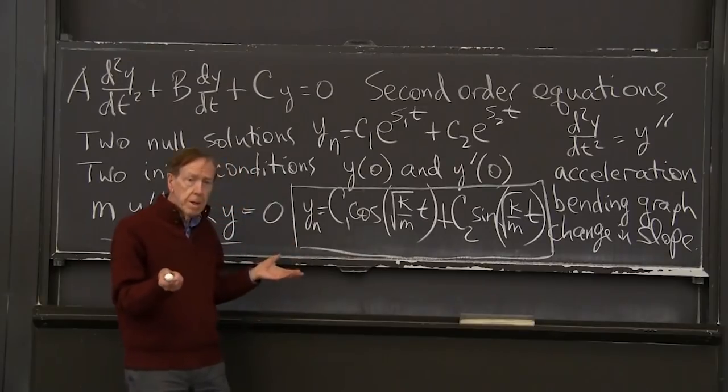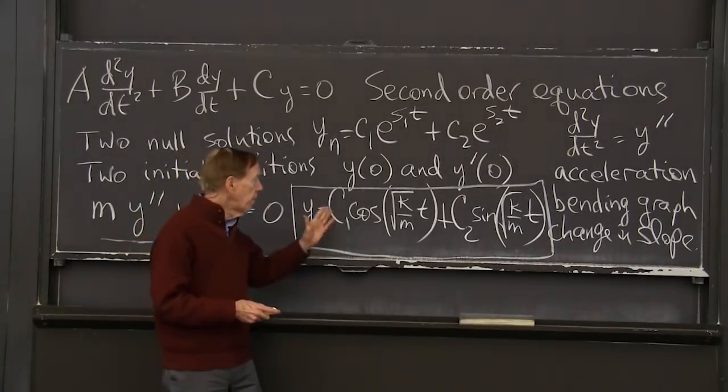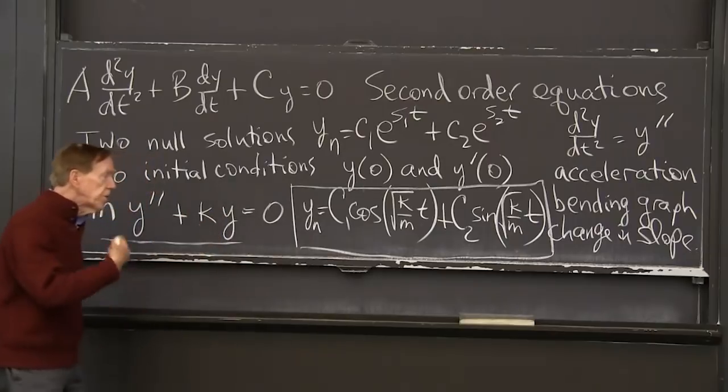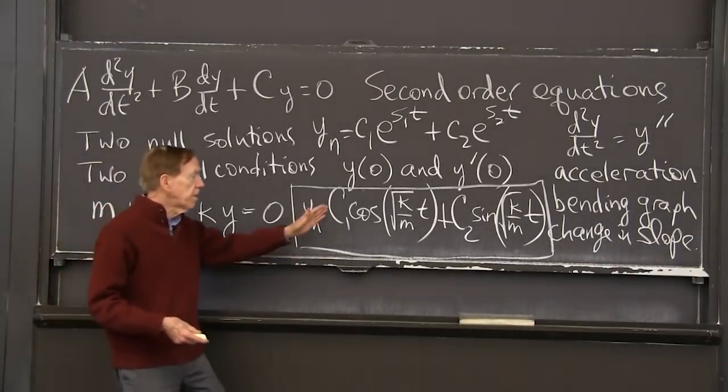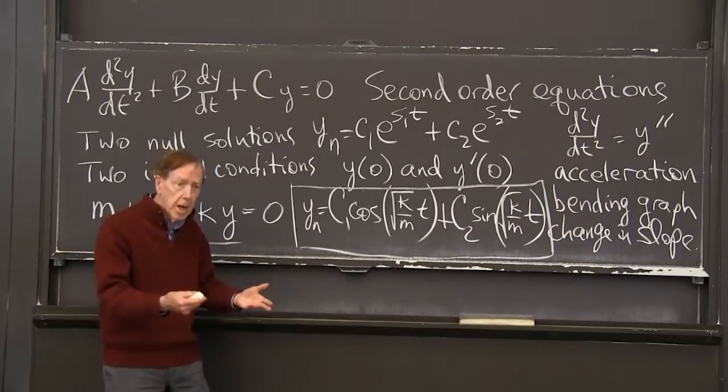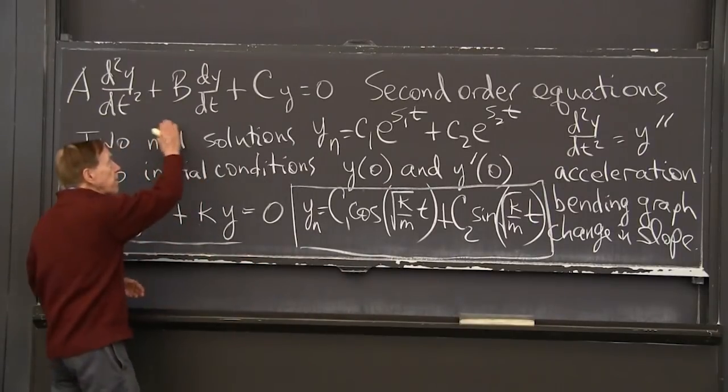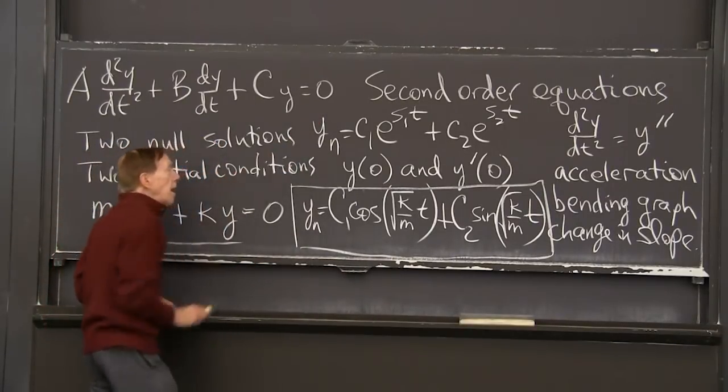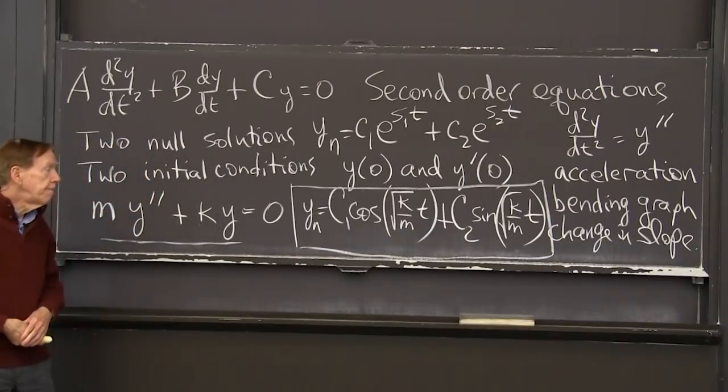It's got the two, it's got two null solutions. They're independent, they're different. If we've got two constants, because our equation is linear, we can safely multiply by any constant and add solutions, and they stay solutions, because we have a linear equation and zero on the right-hand side.